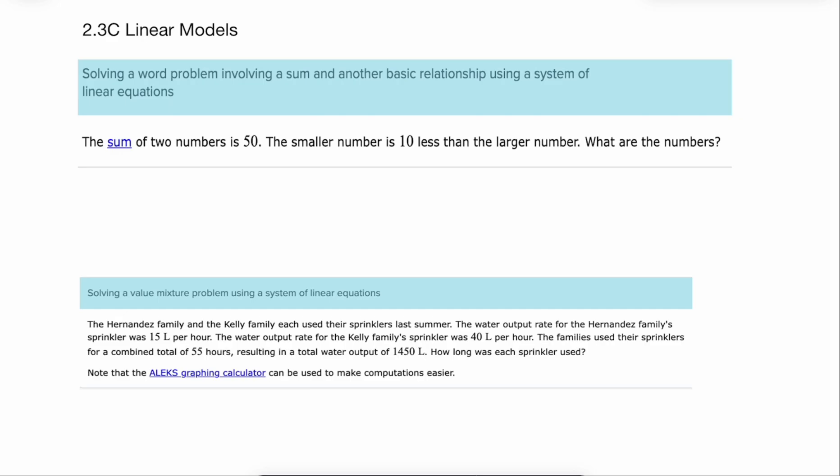So they're always going to give you two equations that will fit the situation. The first one is the sum. Now remember the sum means addition. So that's x plus y equals 50. Now you don't have to call them x and y. You can call them a and b. You can call them whatever you want.